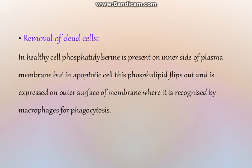Once the cells are dead, removal should take place as soon as possible to prevent inflammation. In normal healthy cells, phosphatidylserine is present on the inner side of the plasma membrane. But in apoptotic cells, while the plasma membrane remains intact, there is an alteration: the phospholipid flips out and is expressed on the outer surface of the cell membrane. This can then be recognized by macrophages for phagocytosis, preventing inflammation of the surrounding areas.